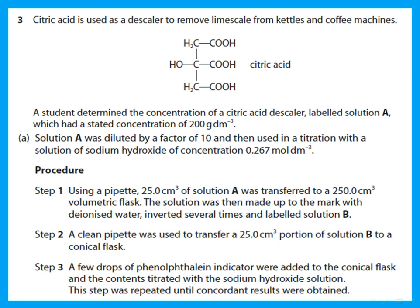Question 3 is about citric acid, used as a descaler to remove limescale from kettles and coffee machines. Students determined the concentration of citric acid descaler labeled solution A, with a stated concentration of 200 g/dm³. Solution A was diluted by a factor of 10: using a pipette, 25 cm³ of solution A was transferred to a 250 cm³ volumetric flask, made up to the mark with deionized water, inverted several times, and labeled solution B.